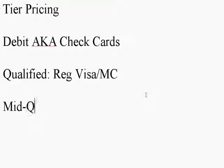Most businesses have the tier pricing structure, and there are four categories. First, there's the debit card transaction, also known as check cards — these are cards linked directly to the consumer's checking account. Then there's the qualified transaction, which is just a regular Visa and MasterCard. Then there's the mid-qualified transaction.